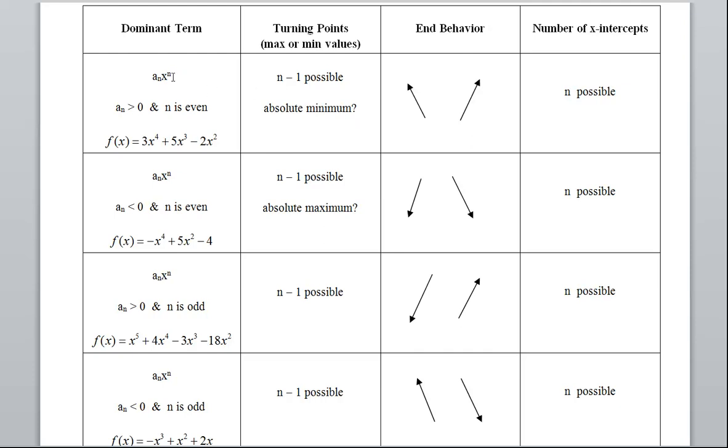So if I know what the largest exponent is, what the degree of the polynomial is, then n minus 1 is how many possible turning points I can have. And if you'll notice, that's the same all the way down, regardless of what type of problem I have. So, largest exponent minus 1, that's how many possible turning points I can have.